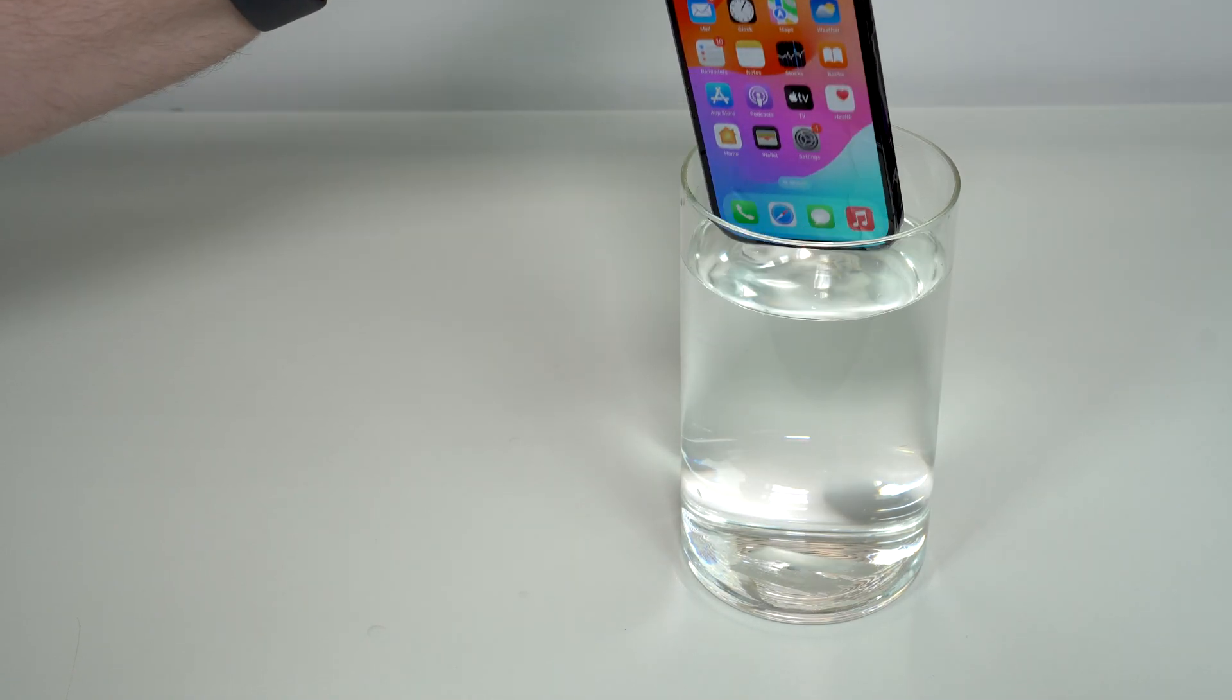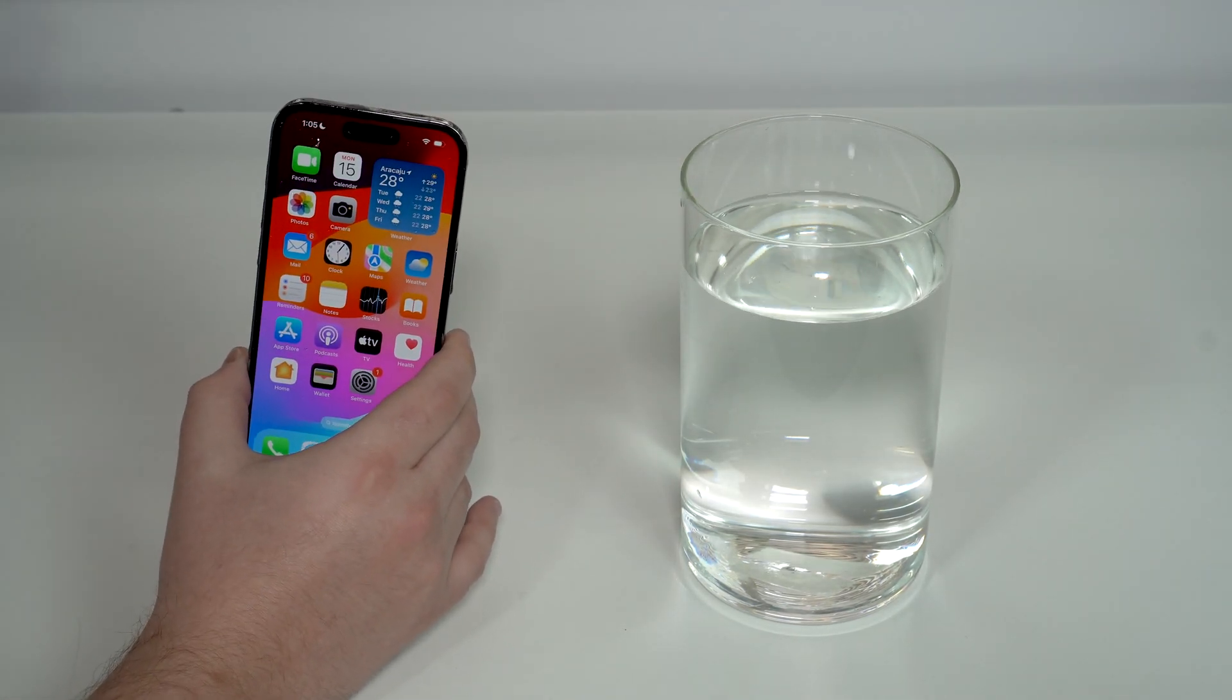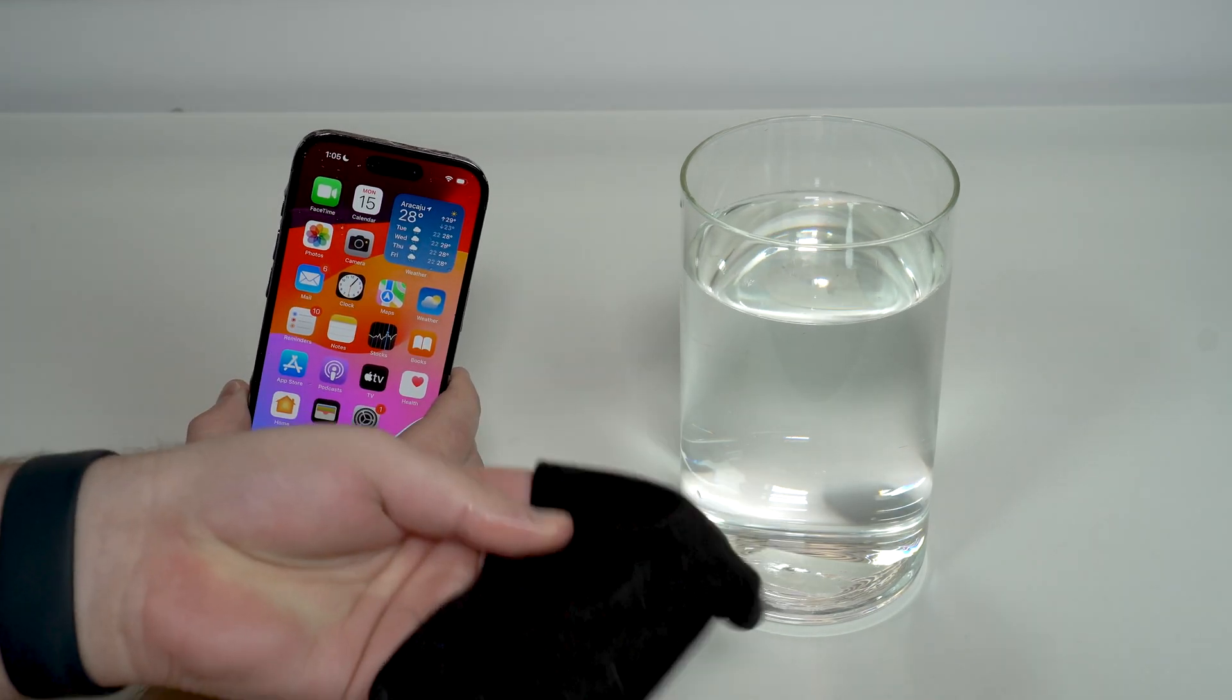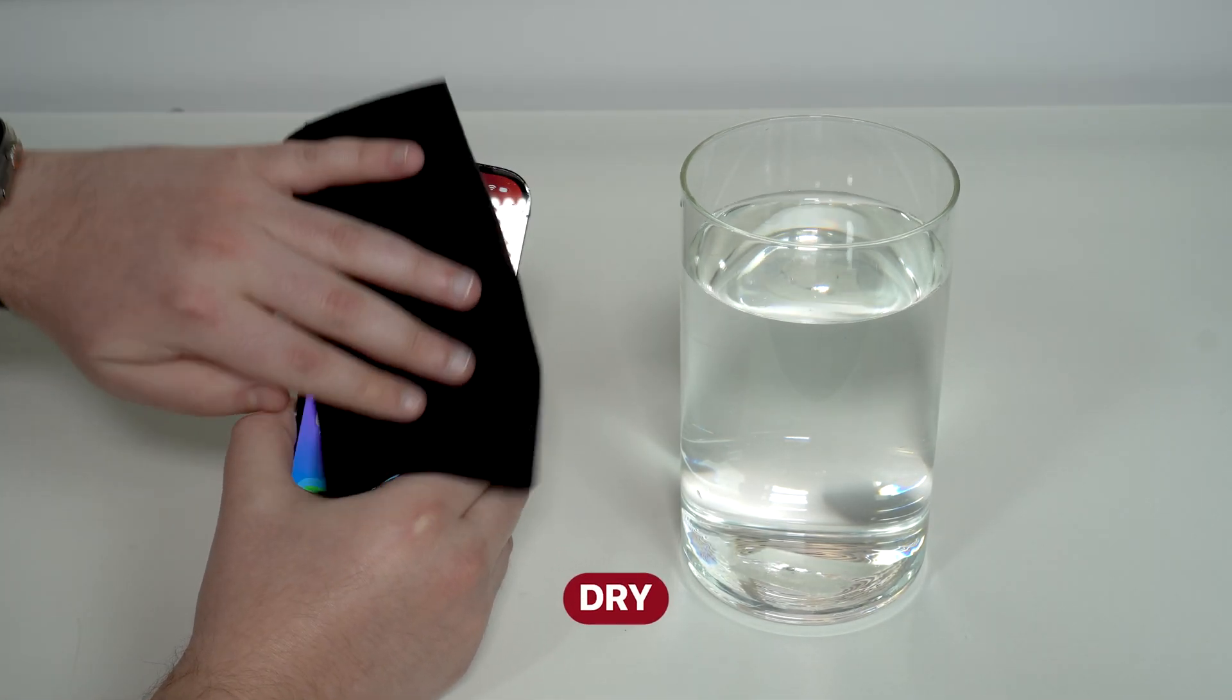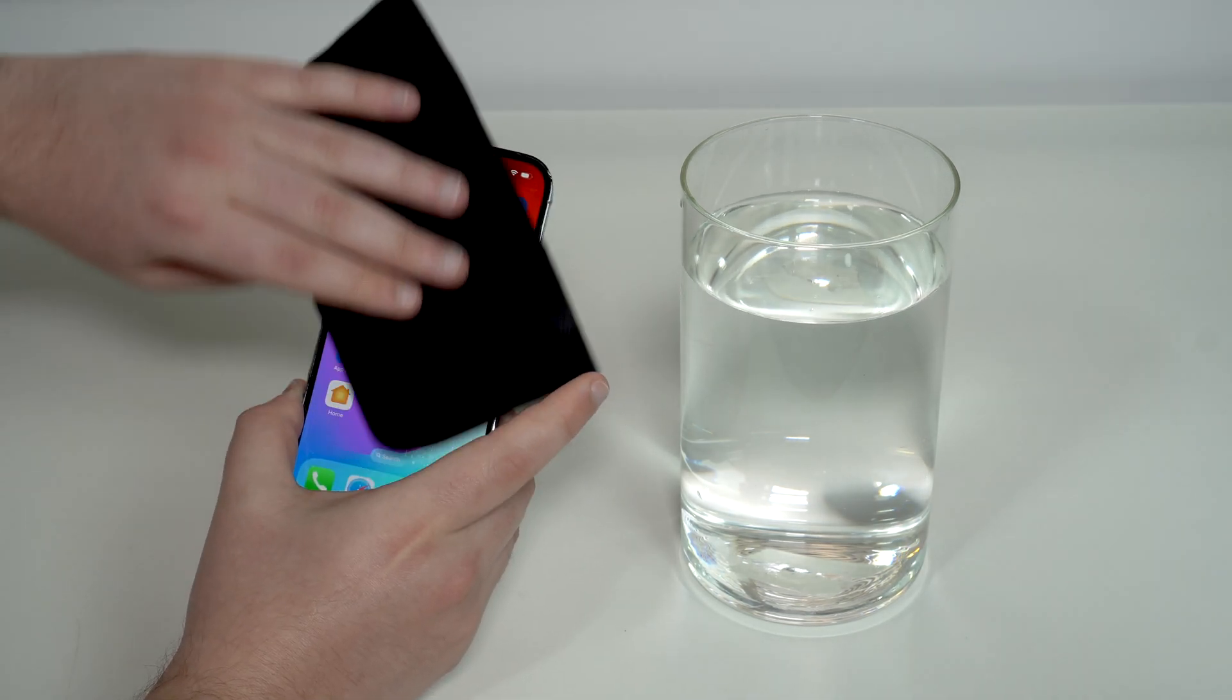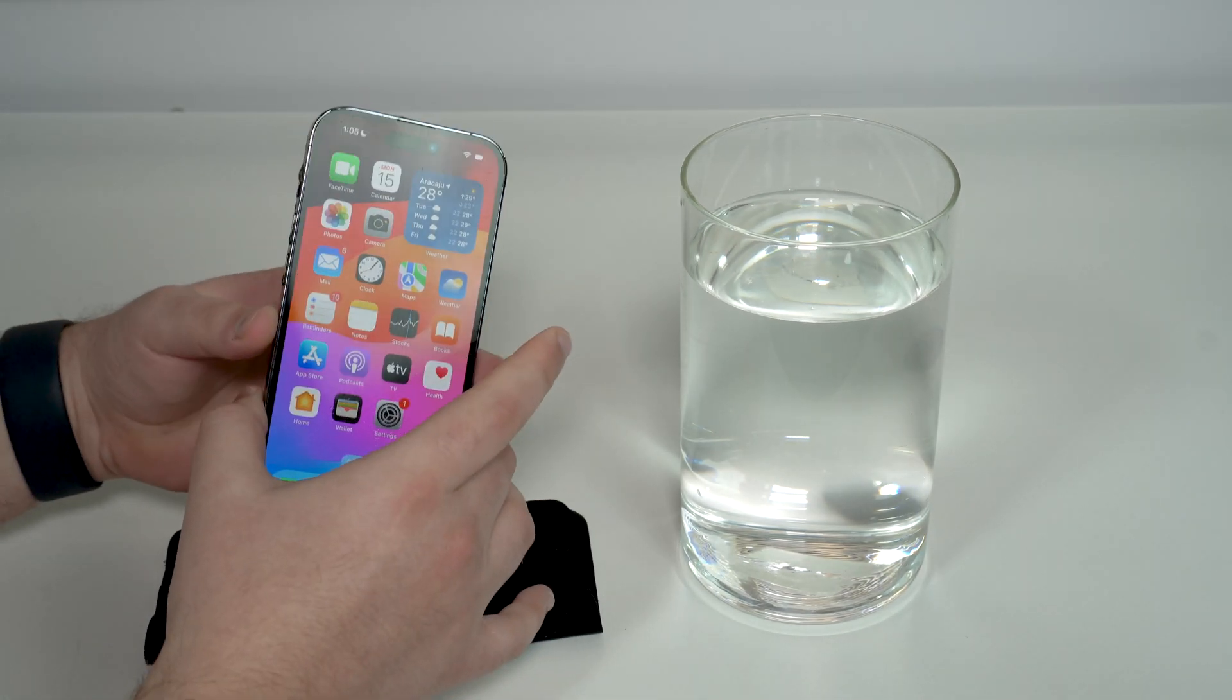As you can see right here, my iPhone is completely wet. The recommendation is you get a microfiber cloth or any cloth you have available, and then you dry your iPhone completely. Dry it off completely, completely dry it.